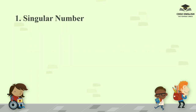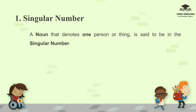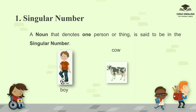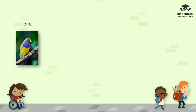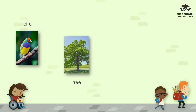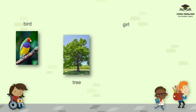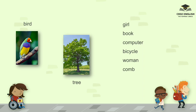Singular number. A noun that denotes one person or thing is said to be in the singular number. For example: boy, cow, bird, tree, girl, book, computer, bicycle, woman, home, key, desk.